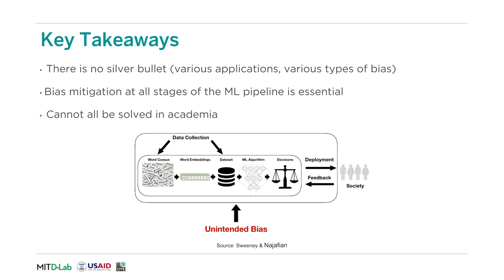Furthermore, unintended bias could come from decisions made when deploying the model in society. When the model is used in a way that does not resonate with how the data was collected, this could cause discrimination — for example, when data collected from a specific demographic population is used to make predictions affecting other demographics not taken into account during data collection. Finally, it is important to have efficient channels of feedback for these machine learning models. It is therefore critical for data scientists and engineers to measure and understand performance of their models not just through accuracy, but also through fairness.